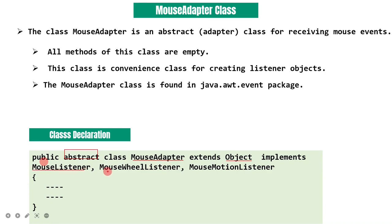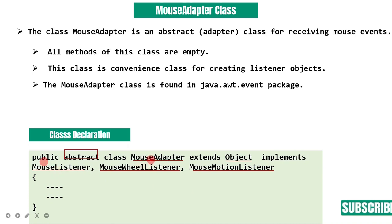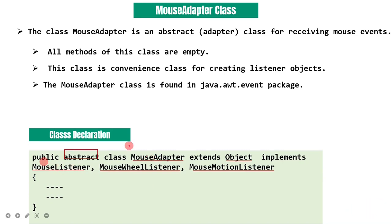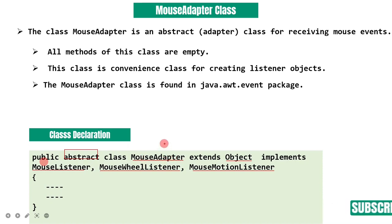The MouseAdapter class implements the MouseListener, MouseMotionListener, and MouseWheelListener interfaces. The MouseAdapter class is a direct implementation class for the MouseListener interface. You can see the methods of the MouseAdapter class.